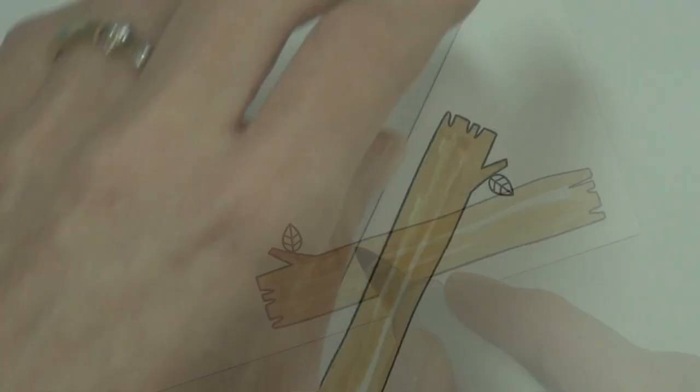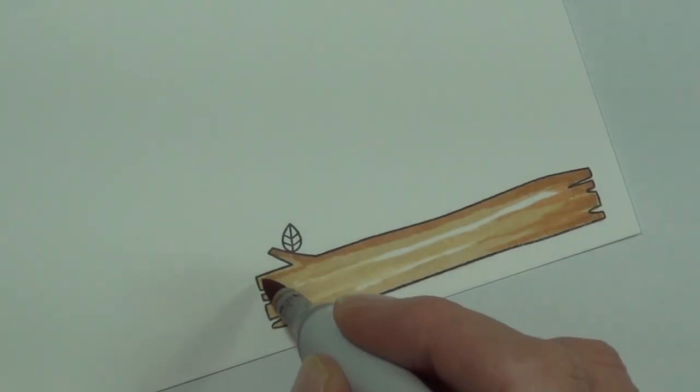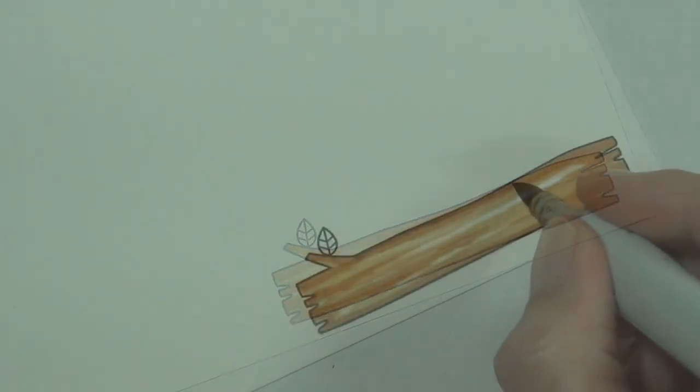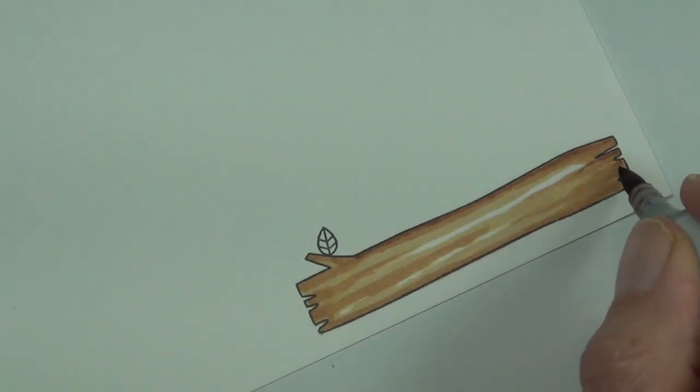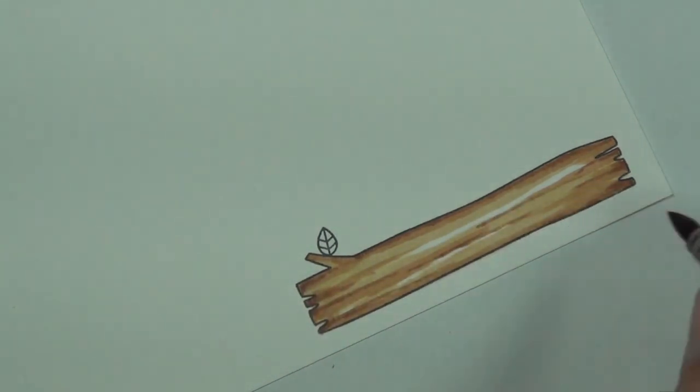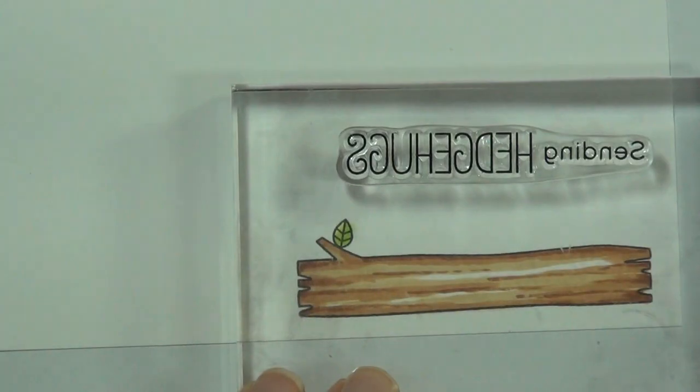I've stamped out the log - this is from the same hedgehog set - and I've decided to use this as my sentiment panel. So I'm coloring with some Copics but I'm not going too dark and I'm not being too fussy because a lot of it's going to be covered up with the sentiment. I'll list all the colors that I use over at my blog today and the link will be in the YouTube description below.